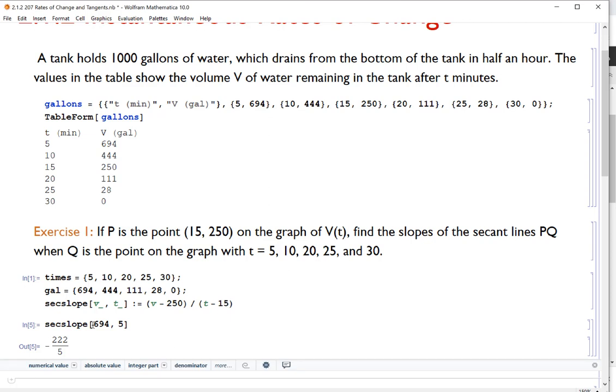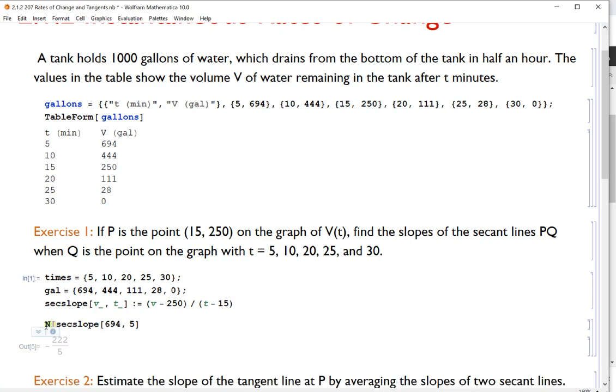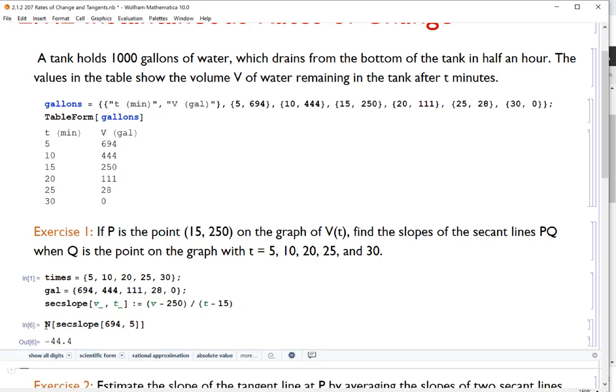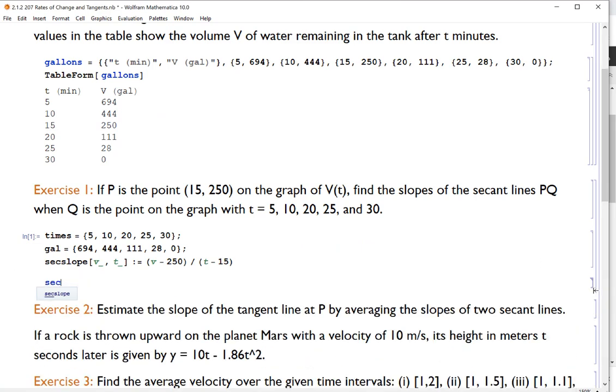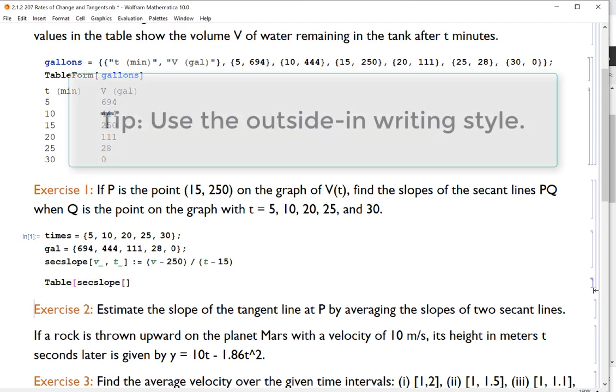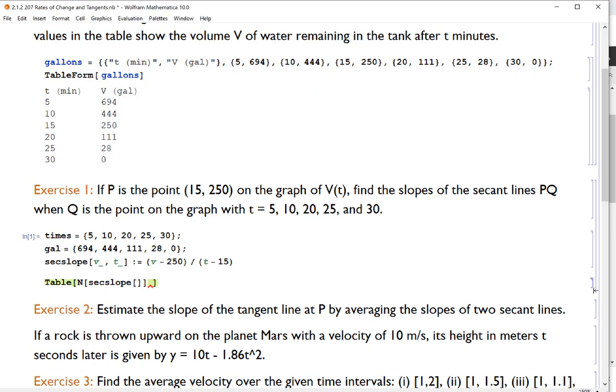There is the secant slope at time equals 5. Now I probably want this numerically. So I could just put an n around it to get a numerical decimal value. And I could do this for each particular time and get all the answers. That's kind of boring though. We want to do it a little bit differently. So let's start off again. Let's do the sec slope. And I want to go through all my gallons and all my times. So I have an idea. I'm going to put a table around this.